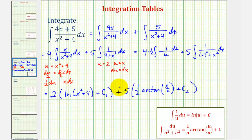Now let's go ahead and distribute. We'll have two natural log of x squared plus four, plus two times c sub one, which we'll come back to, plus five halves, arctangent of x divided by two, plus five times c sub two.